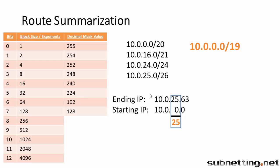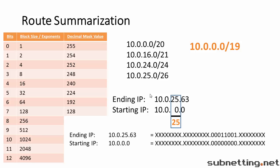If you prefer, we could convert the starting and ending IPs into binary. We only care about the octet that's different. Then we count all the bits that are the same — that's bits 8, 16, 17, 18, 19. Since the 20th bit differs, our answer is slash 19.